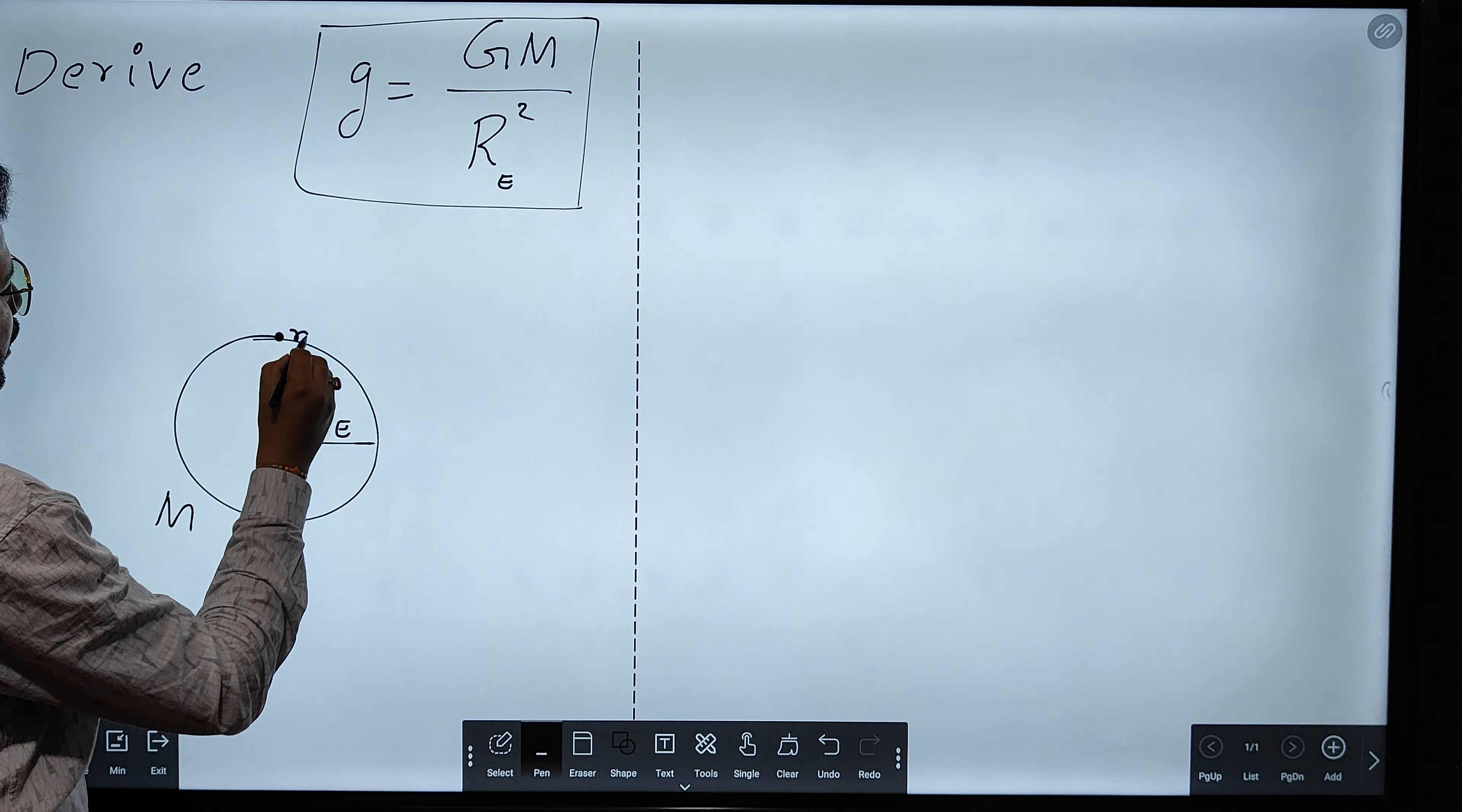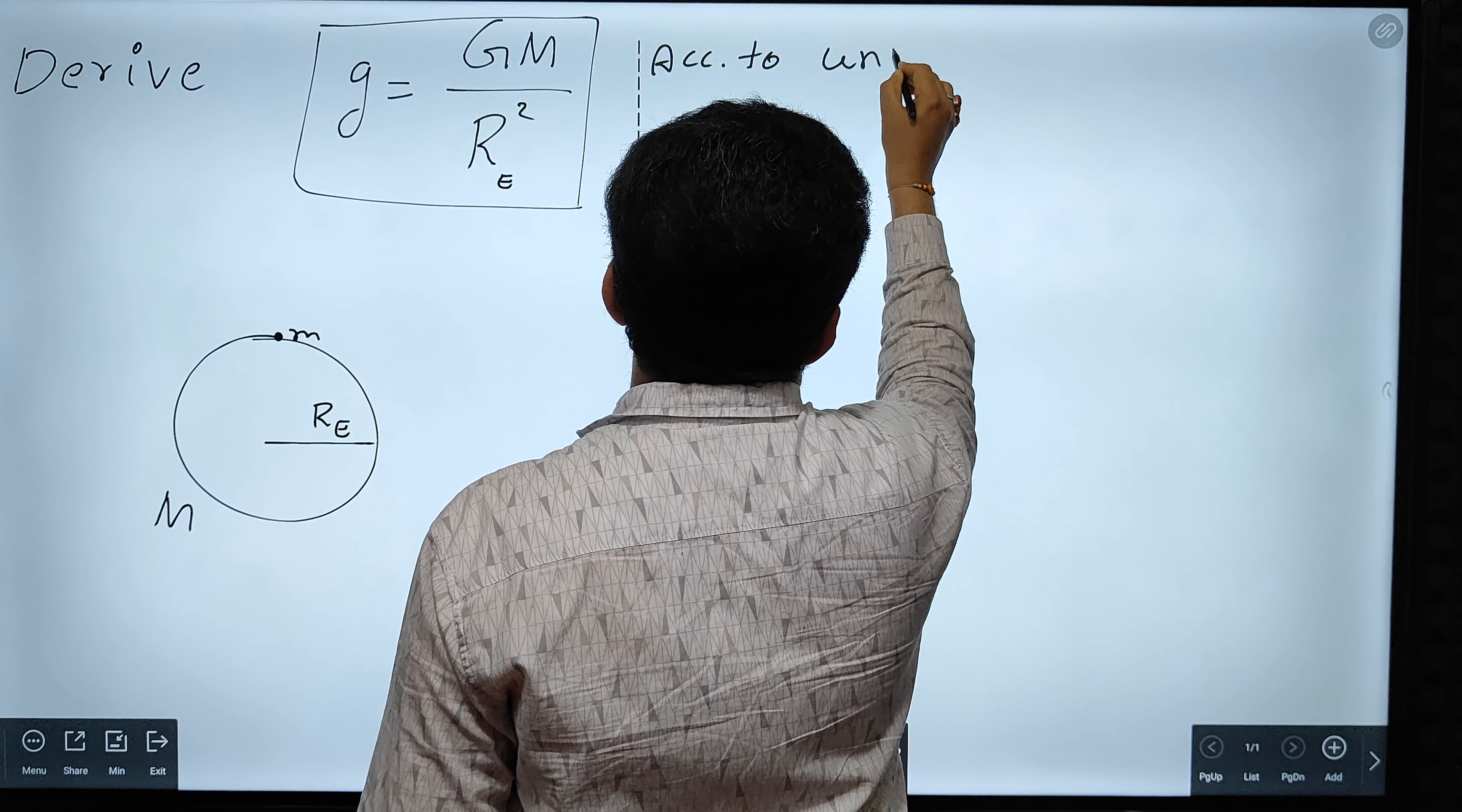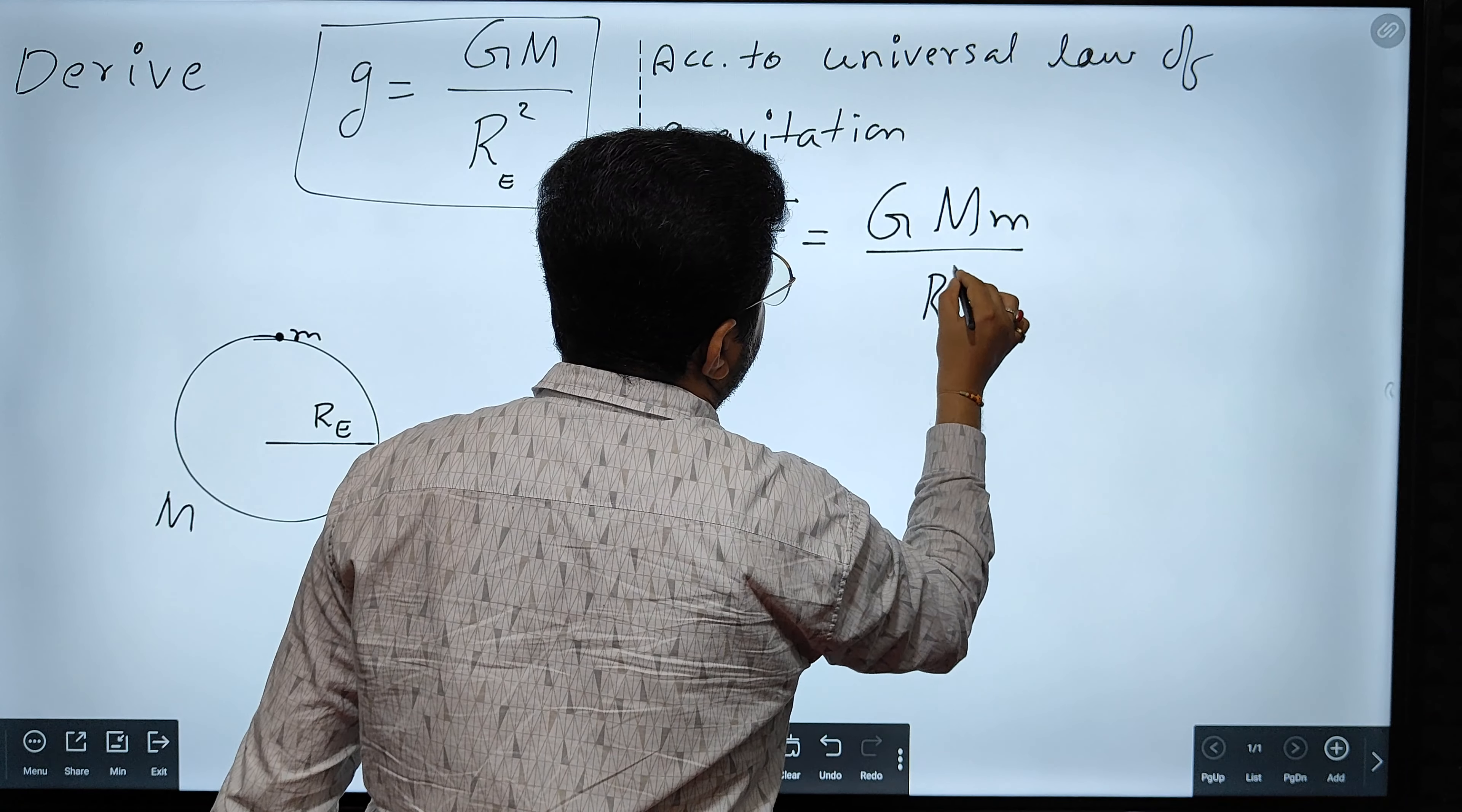Let us suppose we have considered a body of mass m on the surface of the Earth. Now, according to universal law of gravitation, the force between this small body of mass m and the Earth is given by: F is equal to G into mass of the Earth into mass of the body, divided by distance between the two.